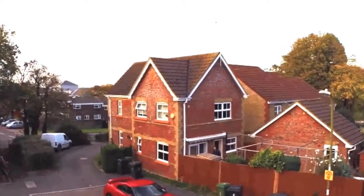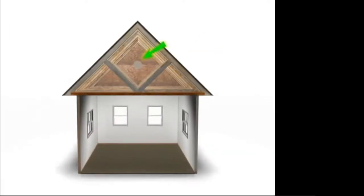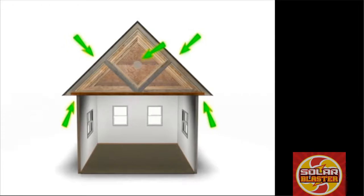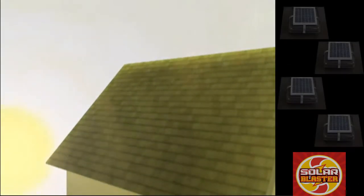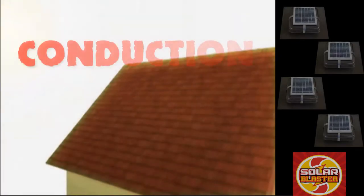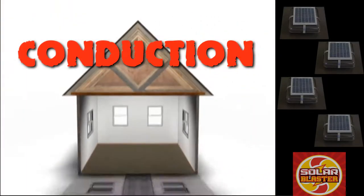Conventional houses with an attic have insulation above the ceiling and vents in the soffits and attic walls. As the sun rises, the roof of your house begins to heat up. Through a process called conduction, heat radiates into the attic.